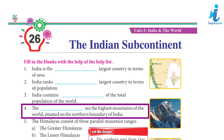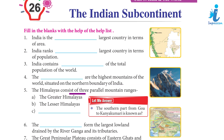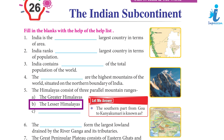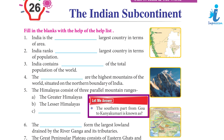4. The Himalayas are the highest mountains of the world, situated on the northern boundary of India. 5. The Himalayas consist of three parallel mountain ranges: a. The Greater Himalayas, b. The Lesser Himalayas, c. The Outer Himalayas.